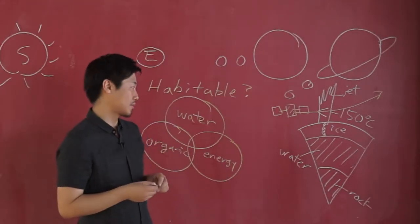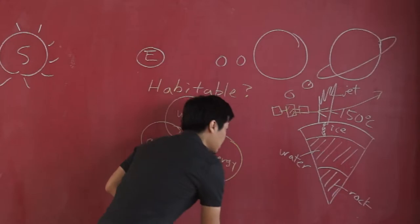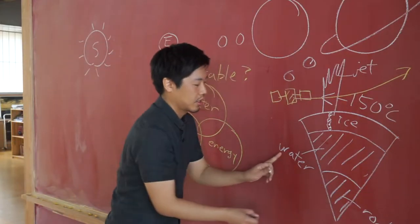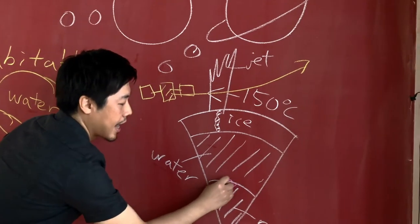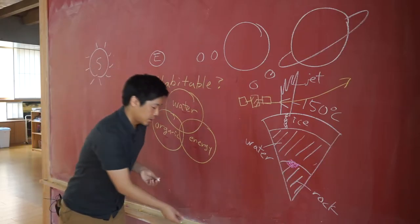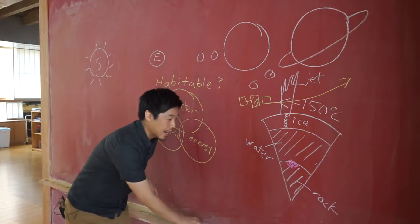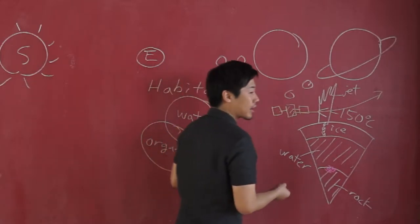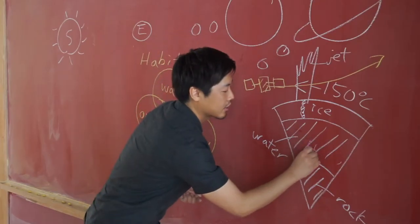So, where did the nanosilica come from? We found that this nanosilica is generated by the reaction of water and rock at high temperature. Recently we found that this high temperature reaction produces food or energy for microbial life, such as hydrogen.